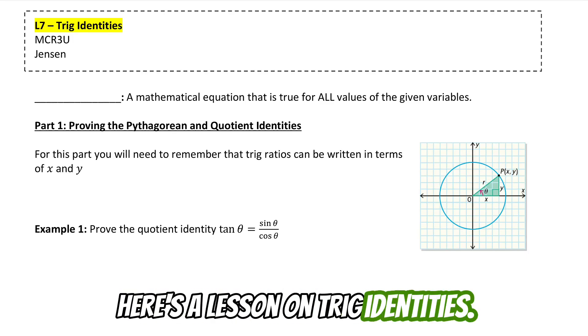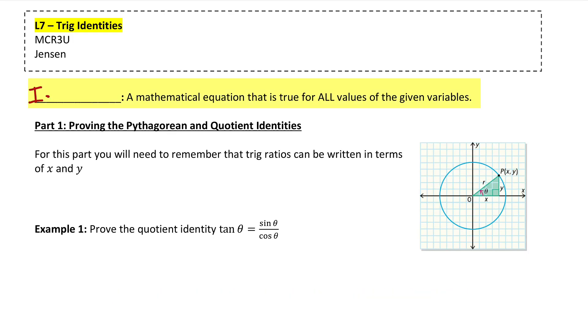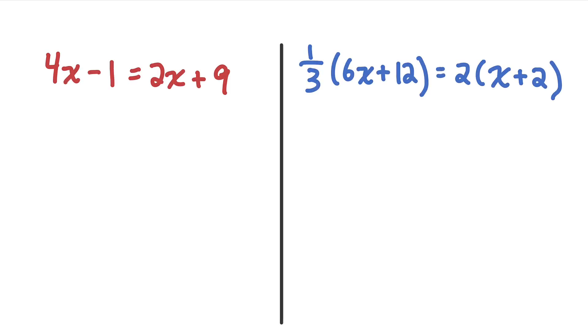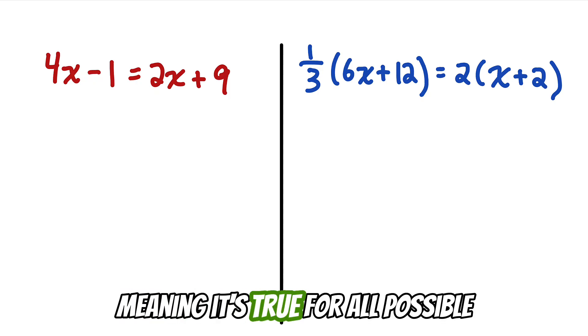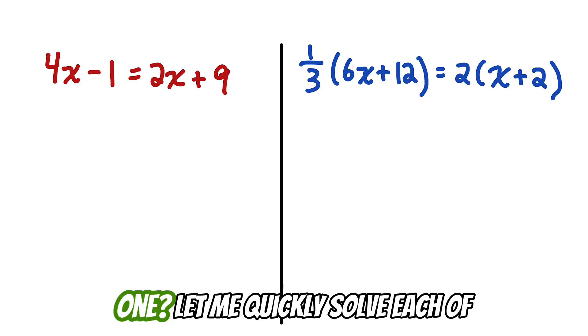Here's a lesson on trig identities. An identity is a special type of math equation that is true for all values of the given variables. Before we get into proving trig identities, let me make it clear what an identity is by showing you two different simple equations. One of these equations is an identity, meaning it's true for all possible values of x. Can you spot which one?